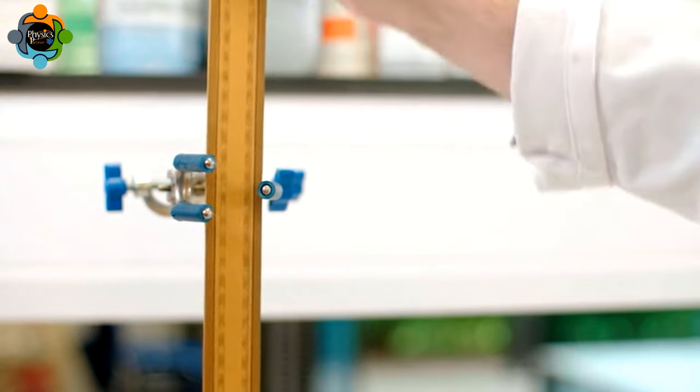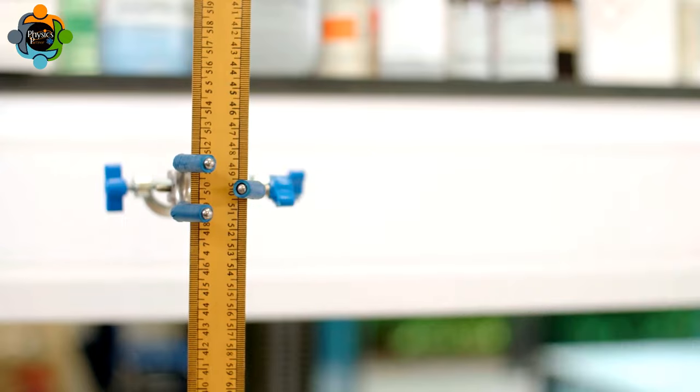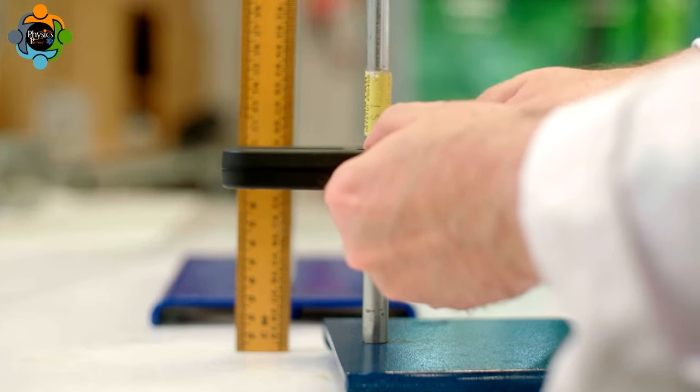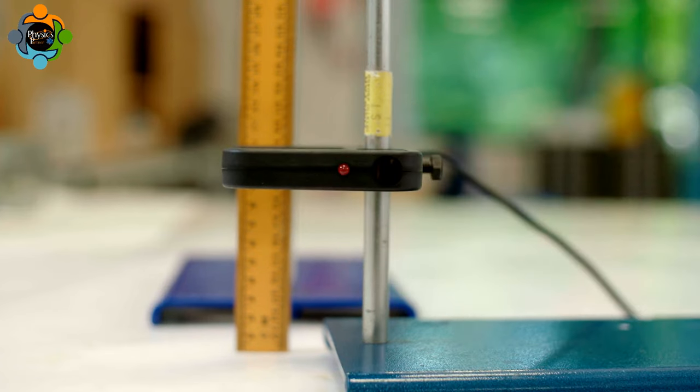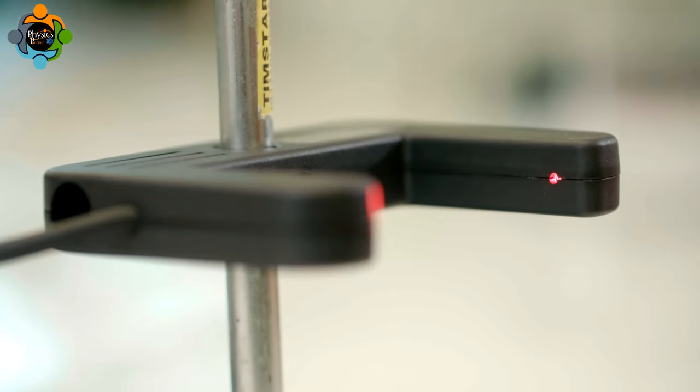The meter rule is attached against one stand, and a light gate is attached to another stand towards the bottom end at 0.1 meters or 10 centimeters above the table top. The light gate is set up to measure a width of 0.05 meters or 5 centimeters.